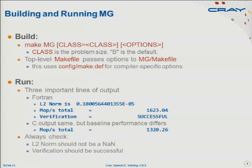When you type make, there's a make file in the top-level directory. That goes into another directory and uses that make file, which gets the architecture-dependent stuff from a third file. This is just the way the NAS parallel benchmarks work — I wanted to leave it as it is. So you compile the code for the CPU, run it on one core, and then look at what happens.